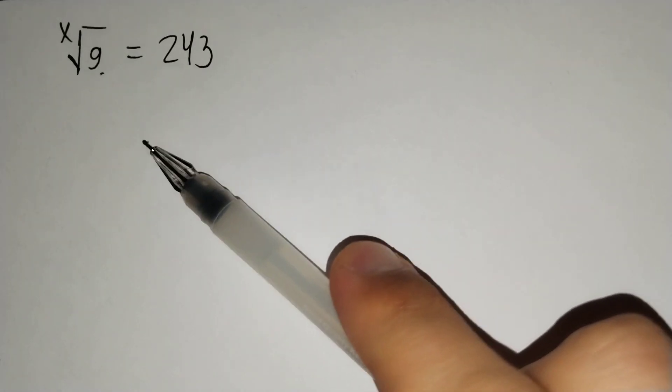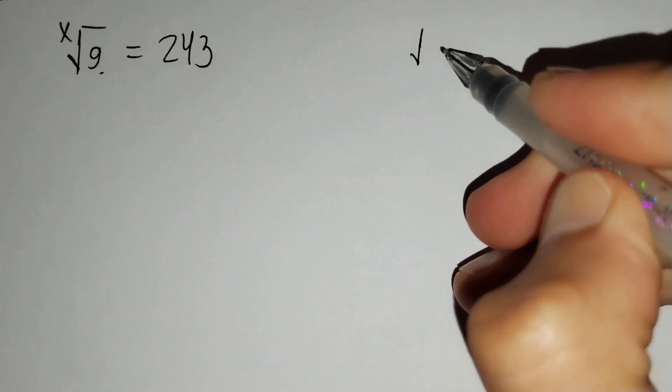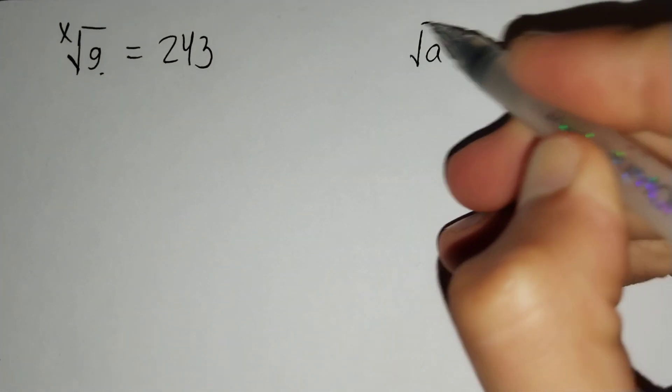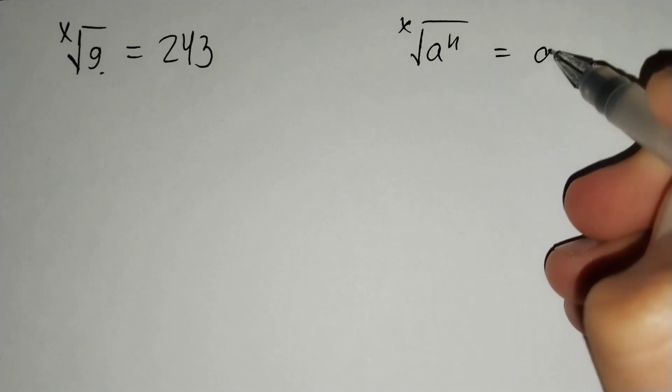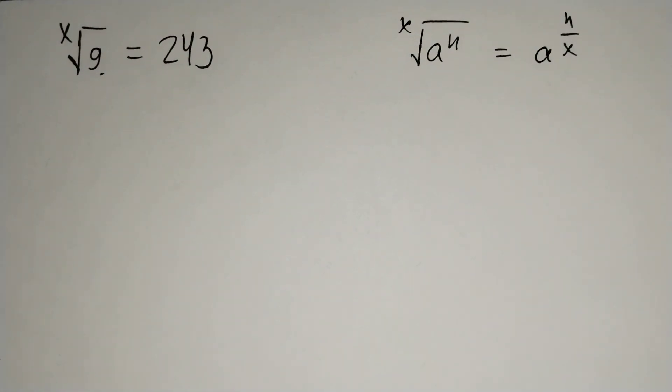How should we solve this problem? Firstly, we know that the root of a power n from x degree equals to a power n over x.